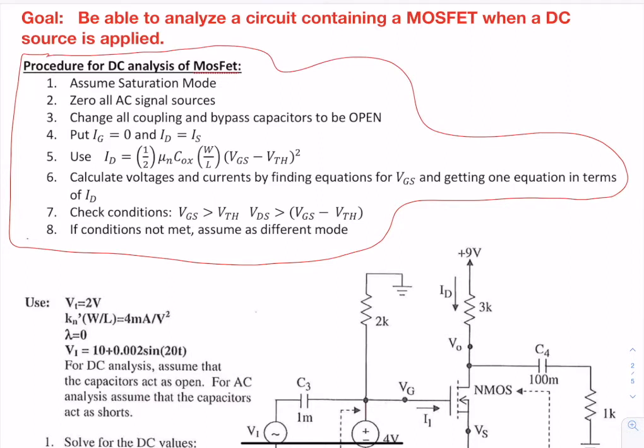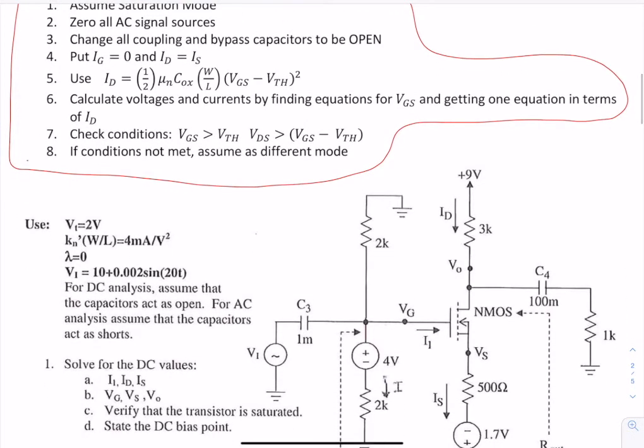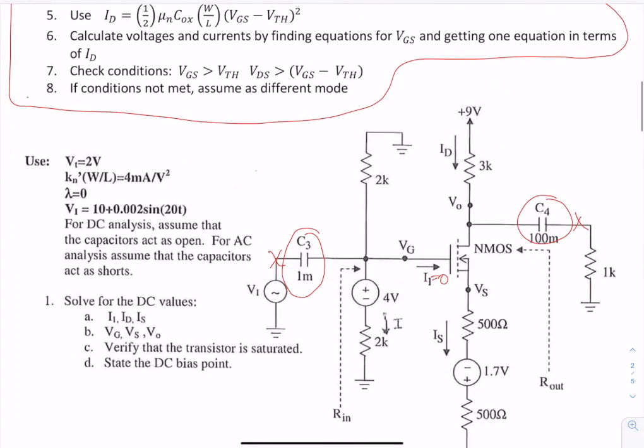The first thing we're going to do is assume a saturation mode. We're going to zero all the AC signal sources, open up all the bypass and coupling capacitors. That will disconnect whatever is connected to them. Then we know that IG is zero, so I1 will be zero, and ID and IS are exactly the same.